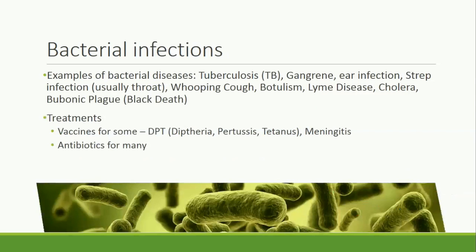There are plenty of examples of bacteria that infect humans and other organisms, causing diseases such as tuberculosis, gangrene, strep infections especially of the throat, whooping cough, botulism, Lyme disease, cholera, and bubonic plague. There are a few options to treat bacterial infections depending on the specific infection. There are vaccines for meningitis, and you probably received your DPT — diphtheria, pertussis, and tetanus — vaccine when you were younger. When vaccinations aren't available, there's a wide array of antibiotics that can be used.